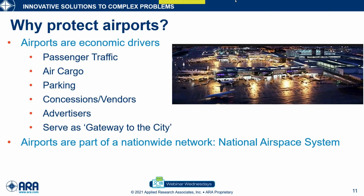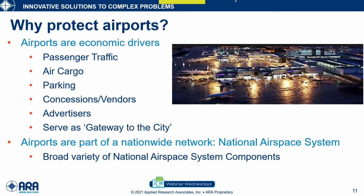Airports are also part of a nationwide network — the National Airspace System, often referred to as NAS. The NAS has various components including airports, navigation facilities, airspace, information, regulations, and manpower. Along with that, you have interdependencies, and if there's a disruption, you get cascading effects. At some of these major nodes, downtime of just a few hours can have cascading impacts across the entire National Airspace System.